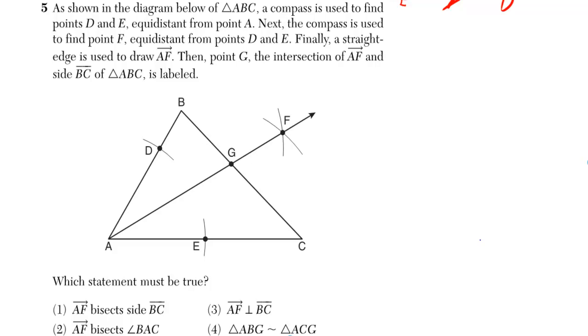As shown in the diagram below of triangle ABC, a compass is used to find points D and E equidistant from point A. Next, the compass is used to find point F equidistant from points D and E. Finally, a straight edge is used to draw AF, then point G, the intersection of AF and side BC of triangle ABC, is labeled.